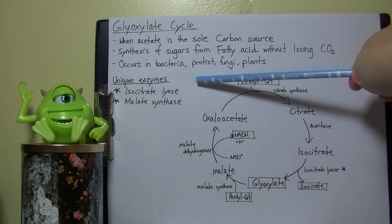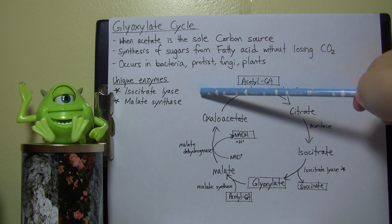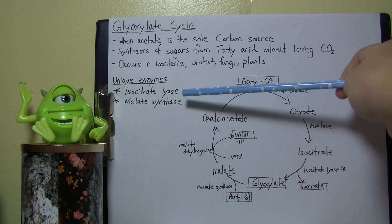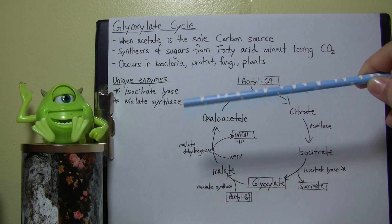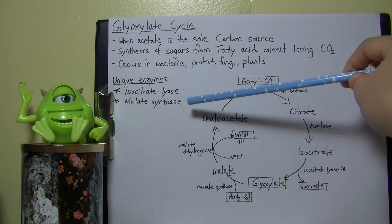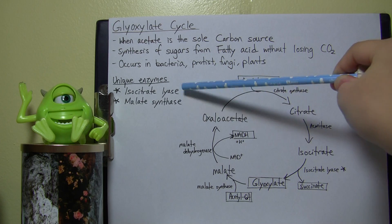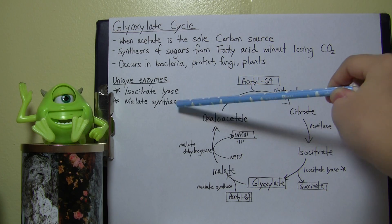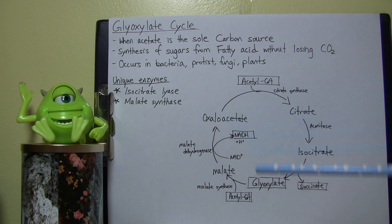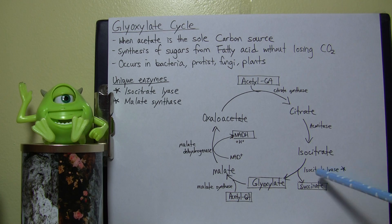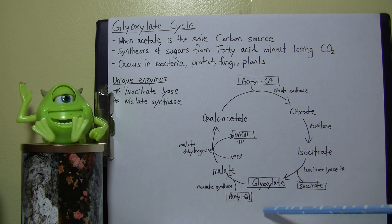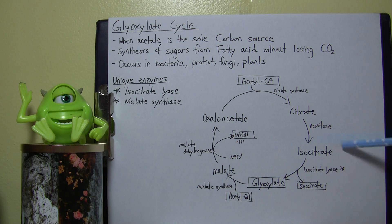The uniqueness of this cycle lies in two different enzymes: isocitrate lyase and malate synthase. The main difference from the standard TCA cycle is this specific process.